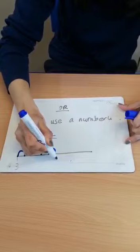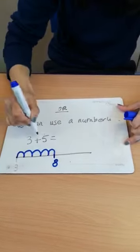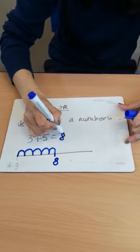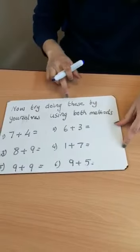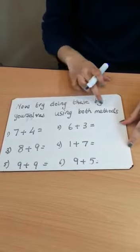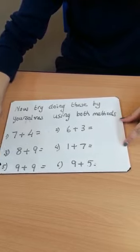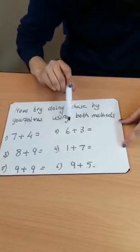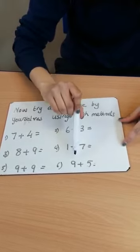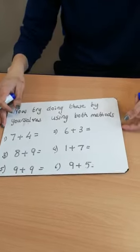Three plus five equals eight. Now try doing these by yourself using both methods. Seven plus four equals, eight plus nine equals, nine plus nine equals, six plus three equals, one plus four equals, nine plus five equals. Thank you.